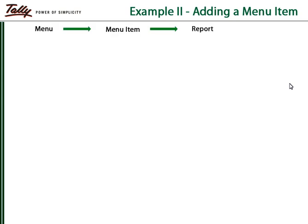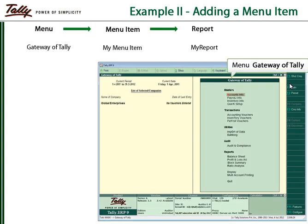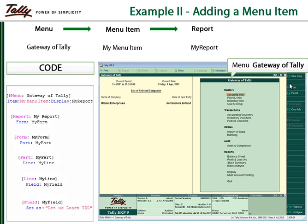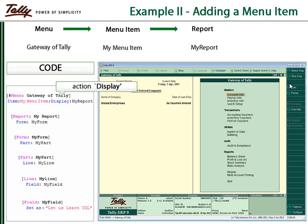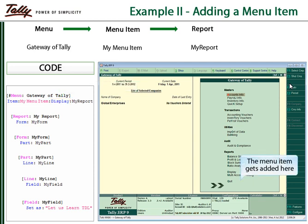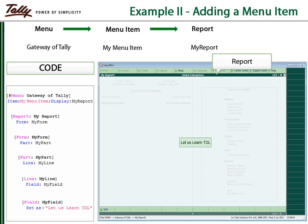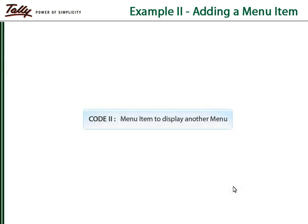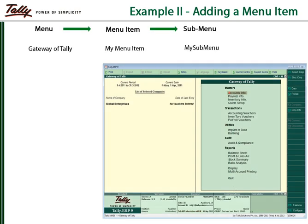Let us see how to write a TDL program to modify a menu by adding a menu item which displays a report. The attribute 'item' is used to provide the name of the item to be added to the menu, followed by the action 'display'. The name of the report to be displayed is specified as the parameter for the action display. To add a menu item which displays another menu, the action used is 'menu'.